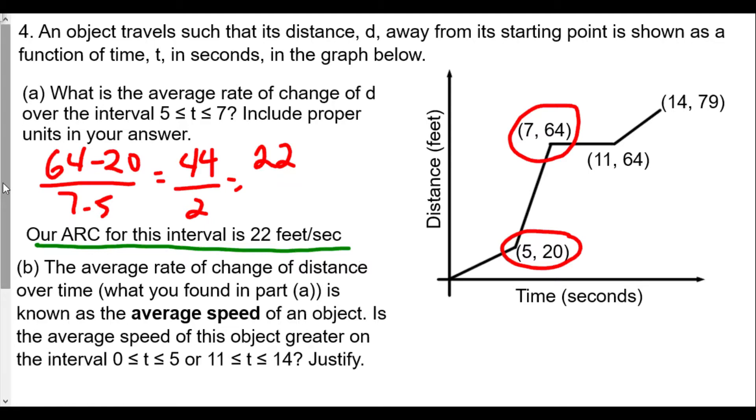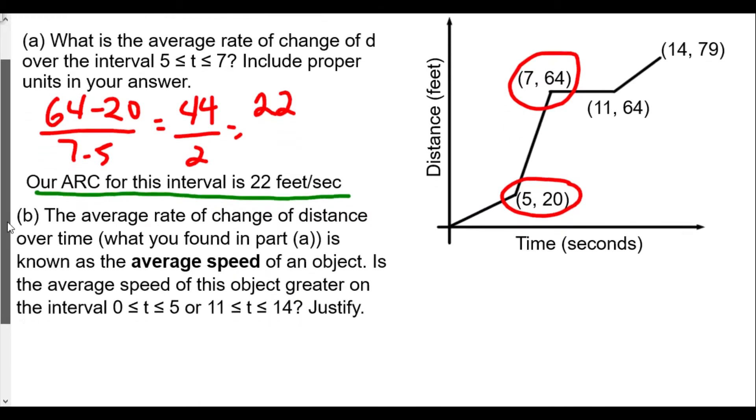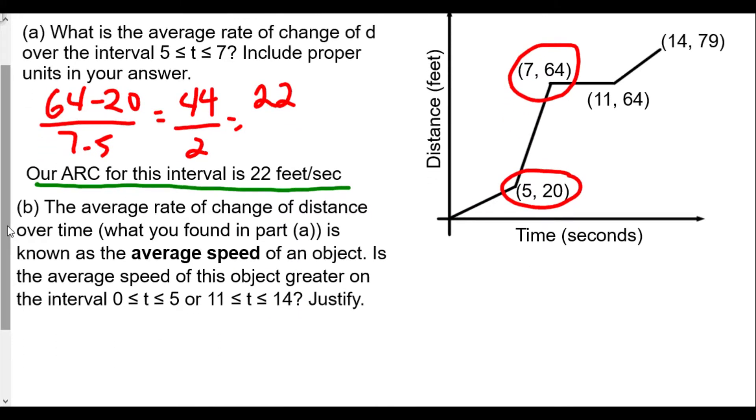Now for part B. The average rate of change of distance over time, which you found in part A, is known as the average speed of an object. Is the average speed of this object greater on the interval from 0 to 5 or on the interval between 11 to 14? Justify your answer.